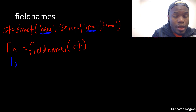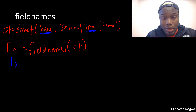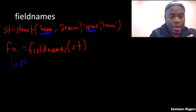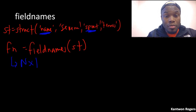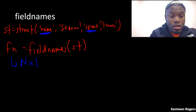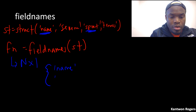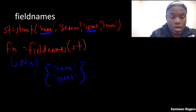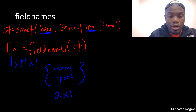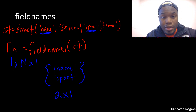So fieldnames produces back a cell array — specifically a column cell array. It produces back an n by one, or vertical, cell array with one column and multiple rows. In this case, fn = fieldnames(st) would give back the cell array {'name'; 'sport'} — a two by one cell array containing my field names.